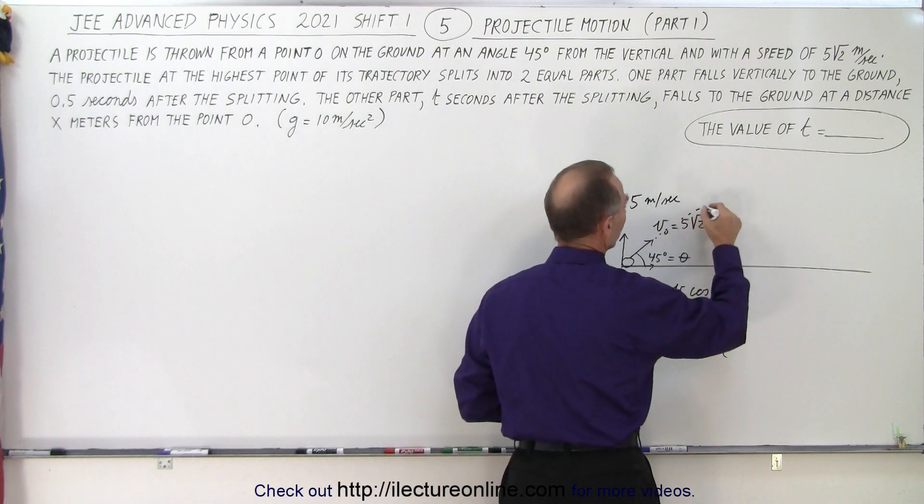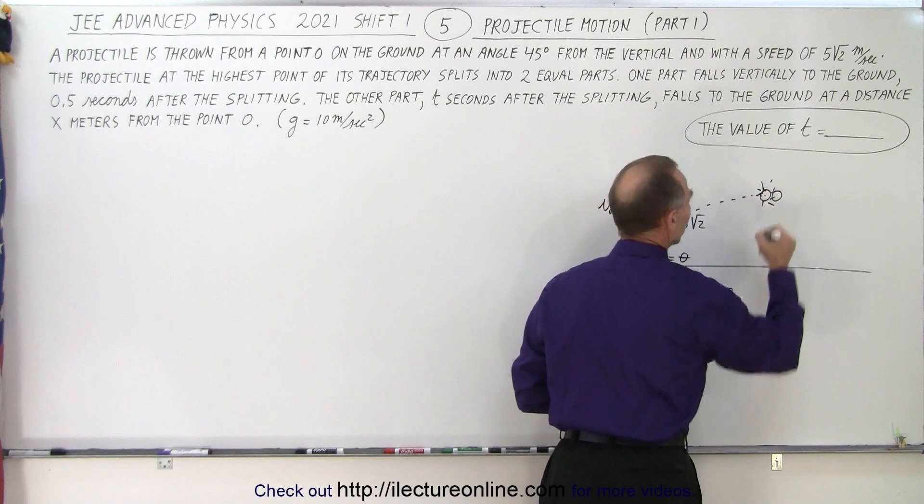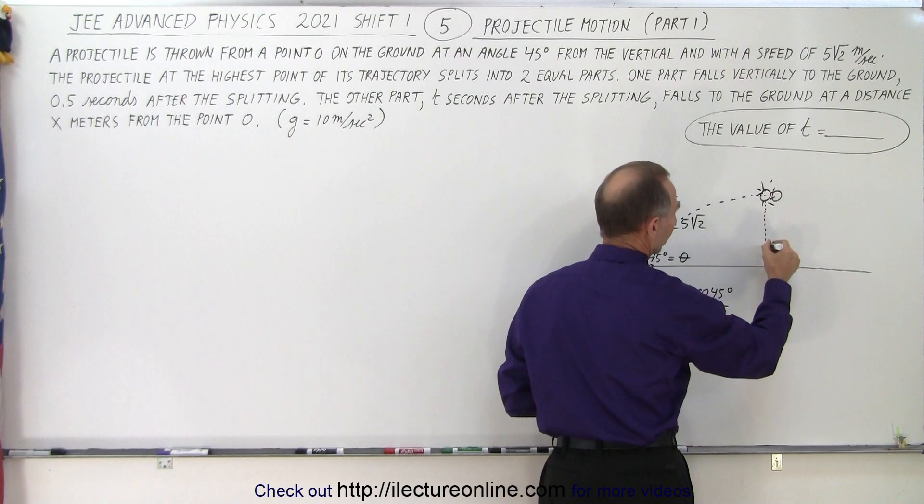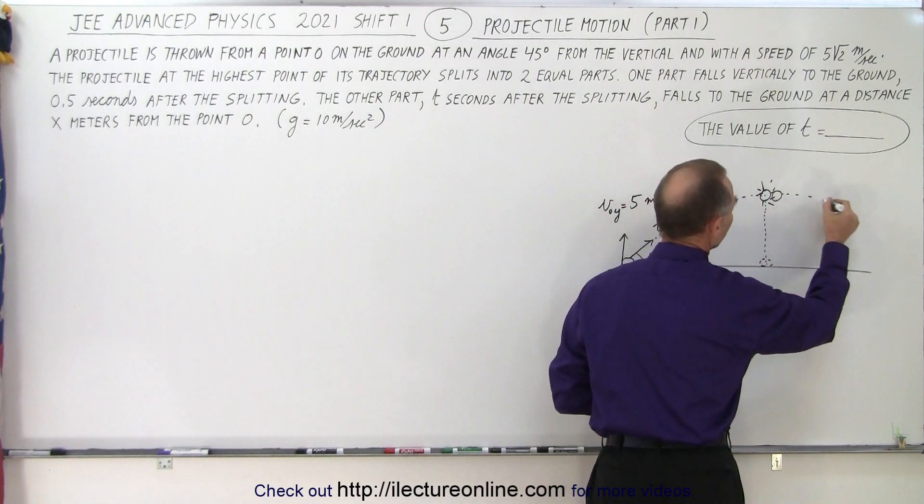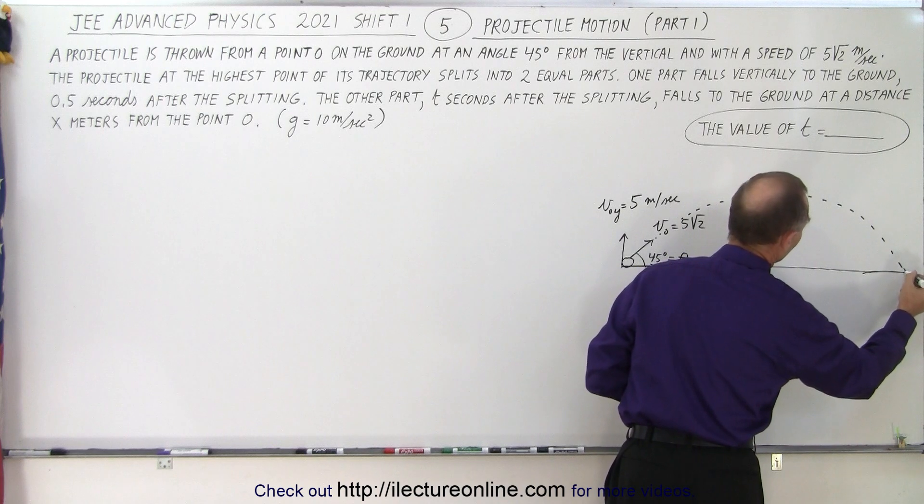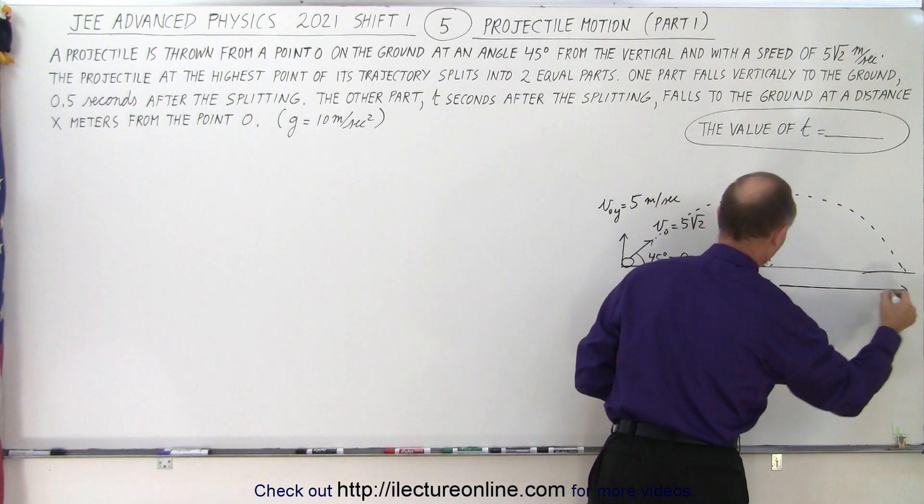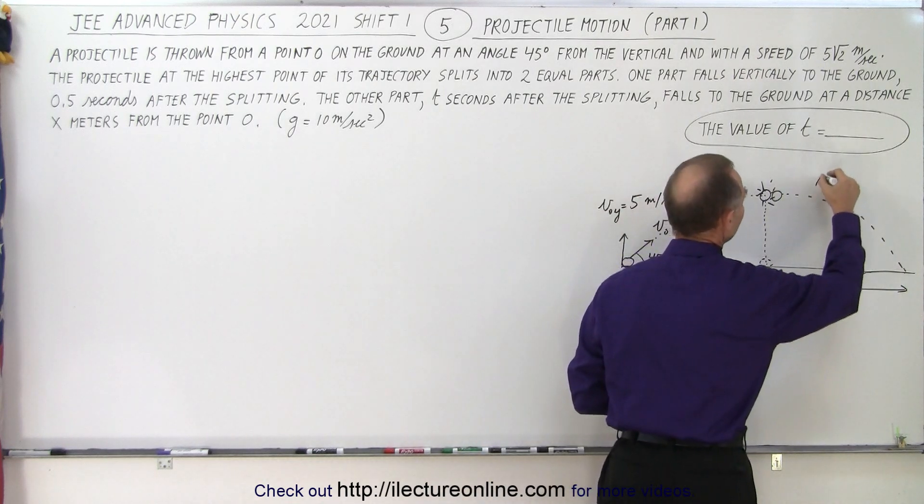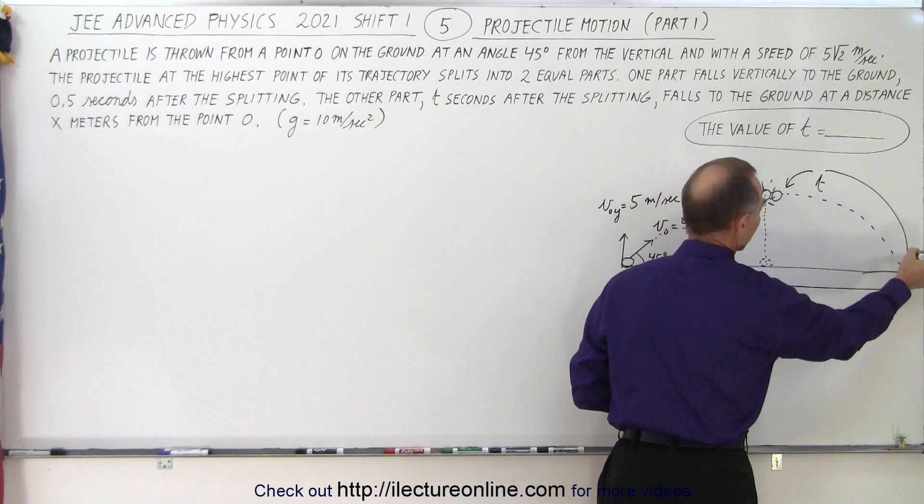The projectile will then reach its maximum height. At that point, something happens to the projectile where it splits into two equal parts. They say one part falls vertically to the ground and the other part keeps going and somewhere lands on the ground at distance x, where x is the distance from the original starting point and t is the time for the second projectile to go from here to here.